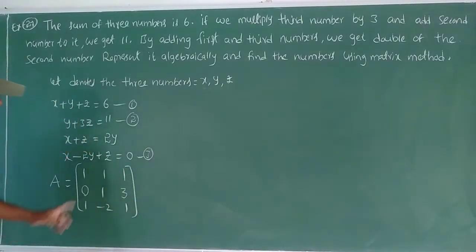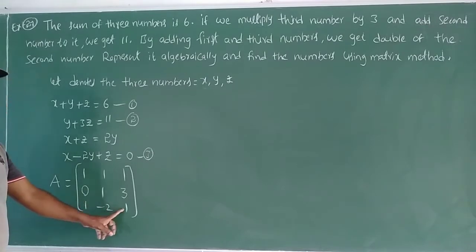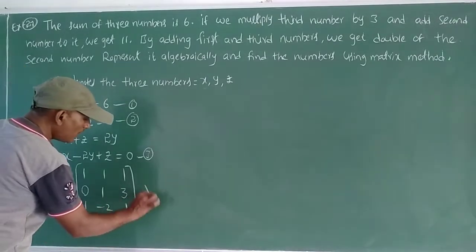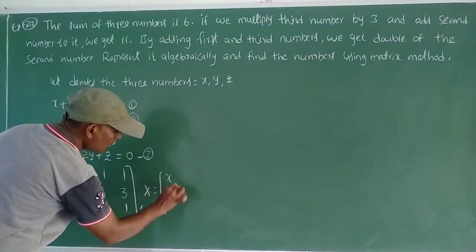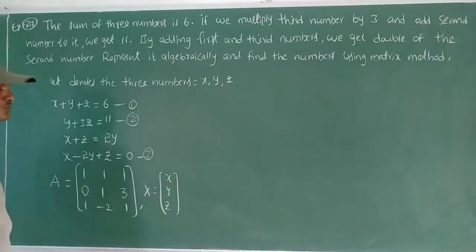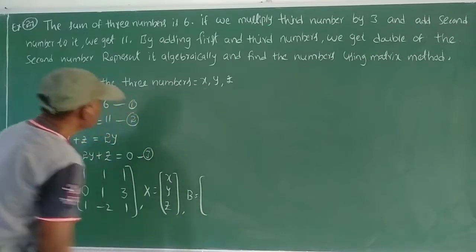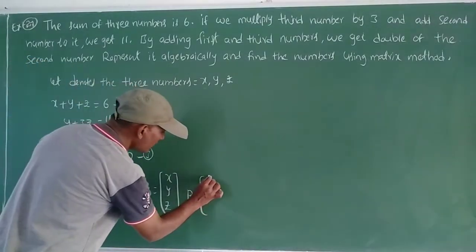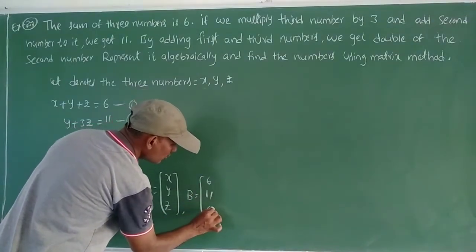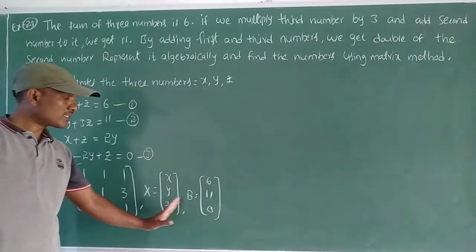So capital A equals the 3×3 matrix with rows [1,1,1], [0,1,3], [1,−2,1]. Capital X equals column matrix [x, y, z]. Capital B equals column matrix of constants [6, 11, 0]. This is the system AX equal to B.